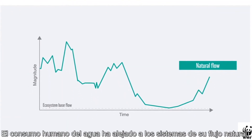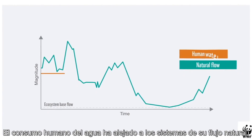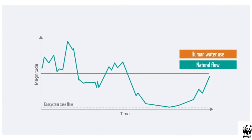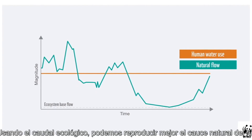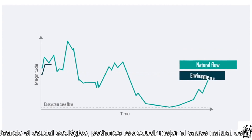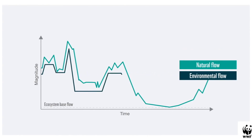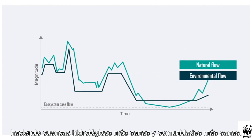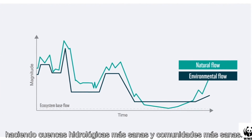Human water use has moved water systems away from their natural flows. By using environmental flows, we can better reflect the river's natural flow, resulting in healthier watersheds and healthier communities.